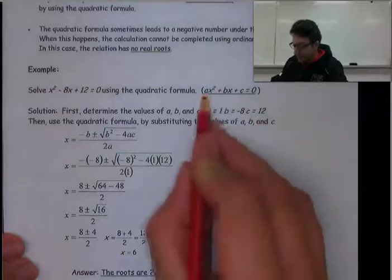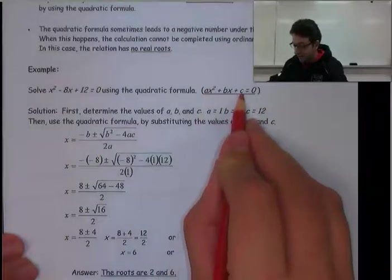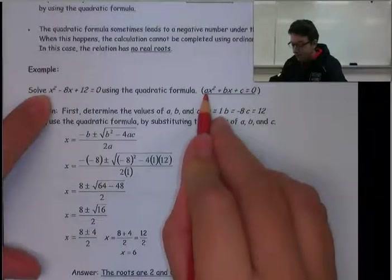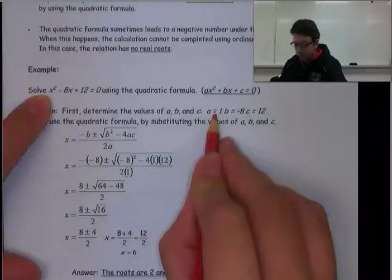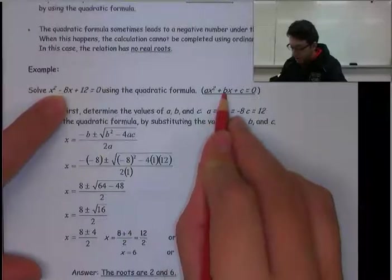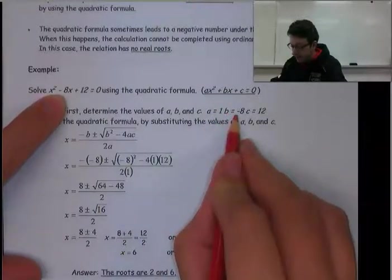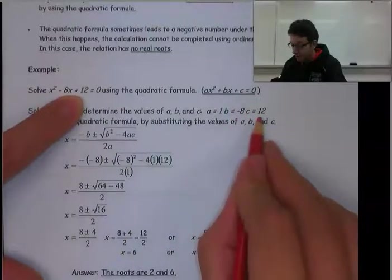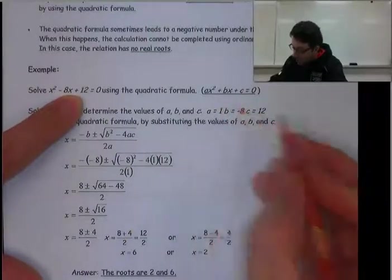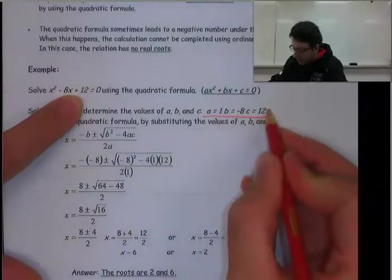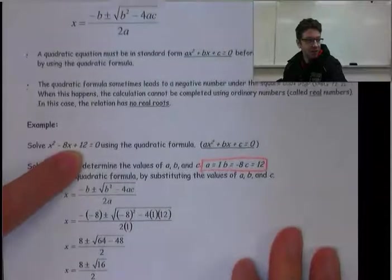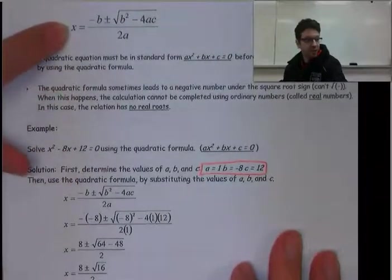In standard form, you have your coefficients a, b, and c. In this case, our a coefficient would be 1, our b coefficient would be -8, and our c coefficient would be 12. We're going to take those coefficients and put them into our quadratic formula.